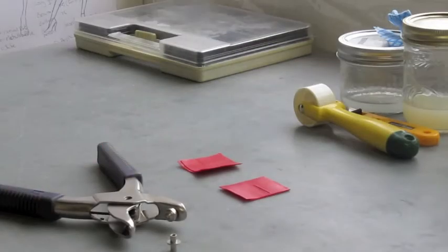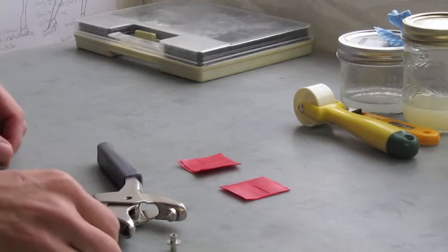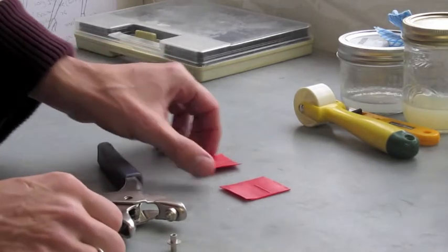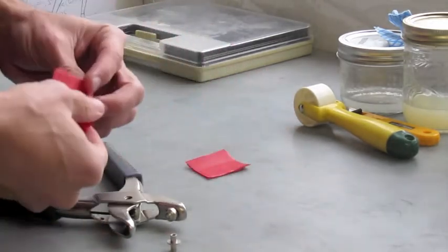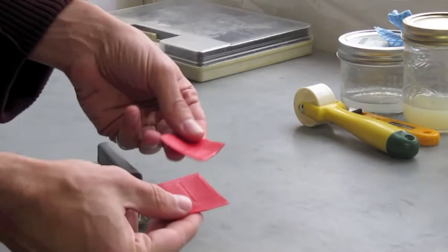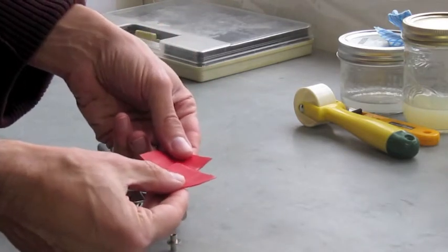The next step is to punch holes where the rivets will be placed. It's a good idea to line up your pieces first to check where you will place the hole and to make sure there is enough overlap in your reinforcements.